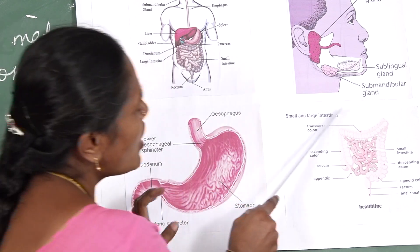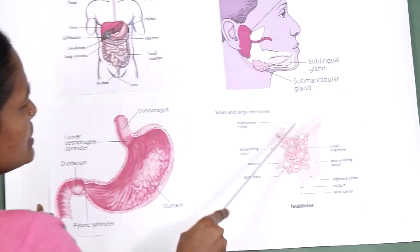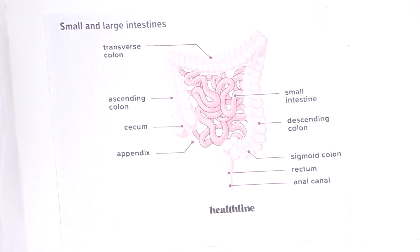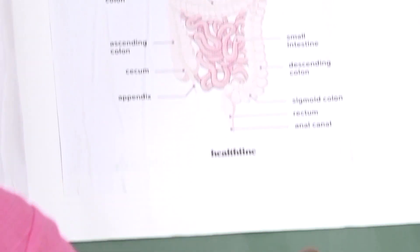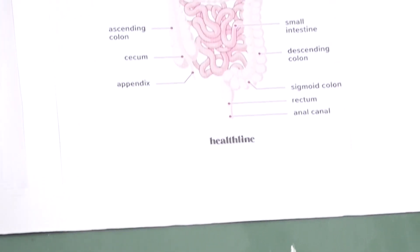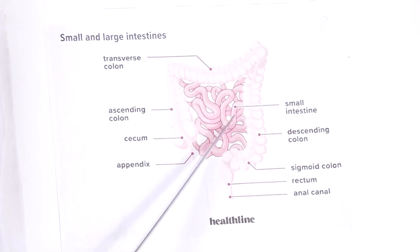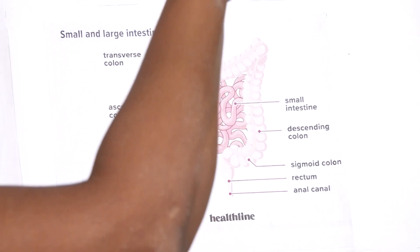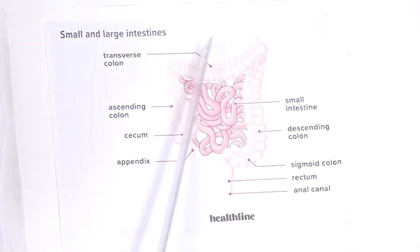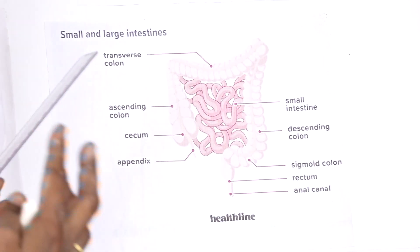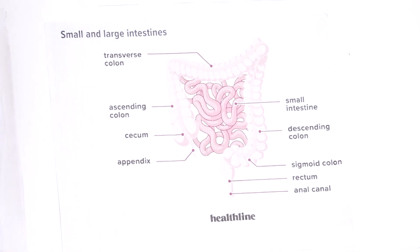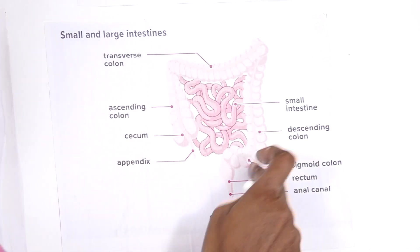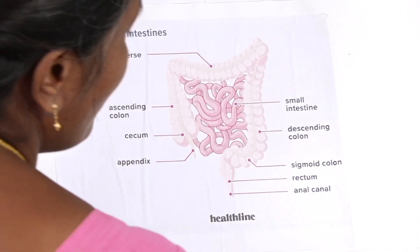The liquid food then passes through the small intestine, which is 6 meters in length. Here, complete digestion takes place and the fully digested food is absorbed into the blood. The food that cannot be digested — unabsorbed food — reaches the large intestine, which is 1.5 meters in length.